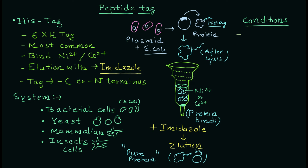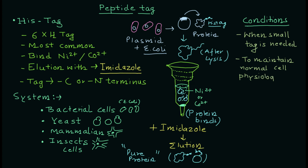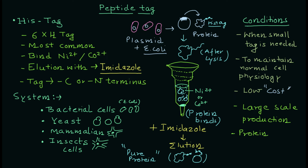There are specific conditions where you would choose the His-tag. First, if you need a small tag so the protein's function is not interfered with, you can use this tag. Second, to maintain normal cell physiology — longer tags like GST may affect cell physiology, so a smaller tag is preferred. Another important aspect is low cost: a basic molecular biology lab is sufficient. Because the cost is low, you can also produce the purified protein in large amounts.